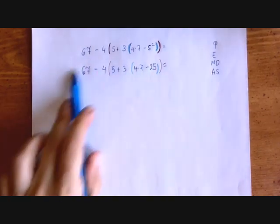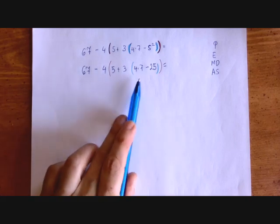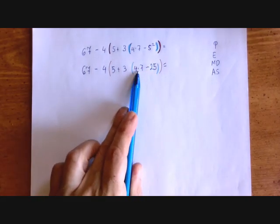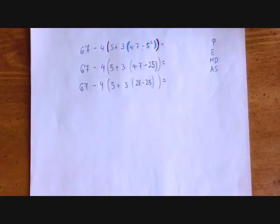And now this is our new problem to solve, and the question is the same. What is the one operation we should do? Well, in the innermost parenthesis, now we have multiplication and subtraction. Multiplication is stronger, so we do that.